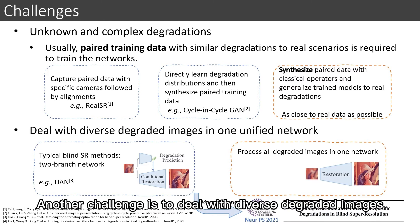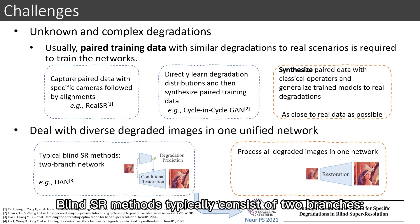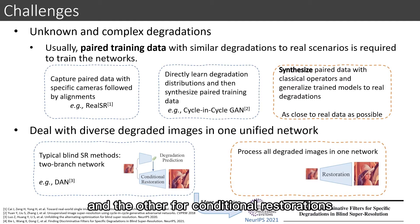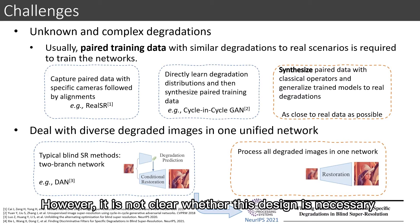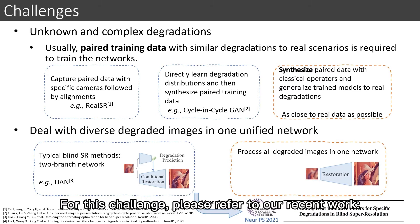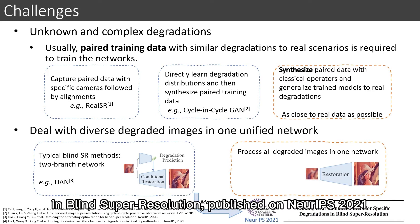Another challenge is dealing with diverse degraded images in one unified network. Blind SR methods typically consist of two branches: one for degradation prediction and the other for conditional restoration. However, it is not clear whether this design is necessary, or whether we can process all degraded images in one network. For this challenge, please refer to our recent work, 'Finding Discriminative Filters for Specific Degradations in Blind Super Resolution,' published at NeurIPS 2021.